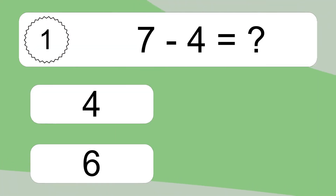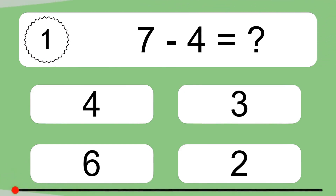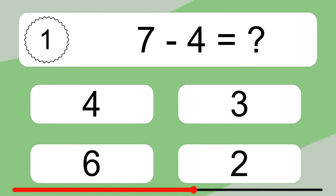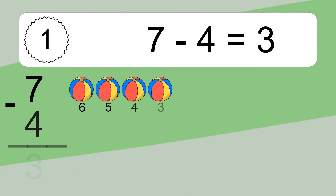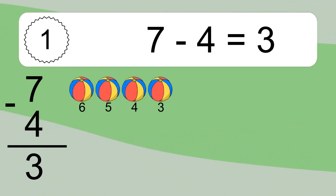7 minus 4 equals what? 7 minus 4 equals 3. Let's count it: 6, 5, 4, 3.